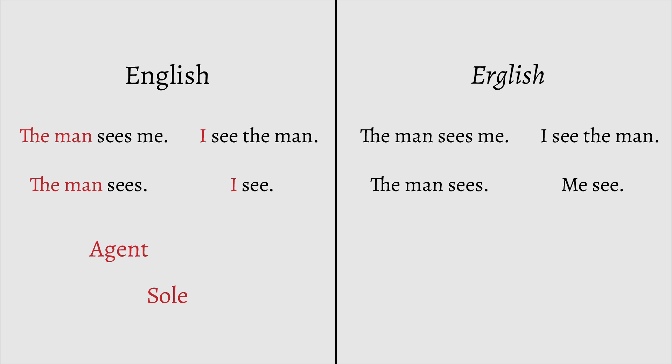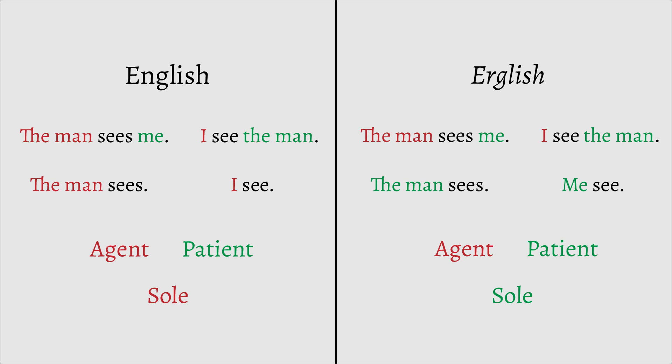Both use the nominative case. The object of the transitive sentence, or patient, as it's the one receiving the action, is marked differently, using the accusative case. In the Erglish sentence, the subject pronoun of the intransitive sentence — the sole — takes the same form as the object pronoun of a transitive sentence, the patient; this being the absolutive case. Which means the subject of the transitive sentence, the agent, has to take a different form, which is the ergative.